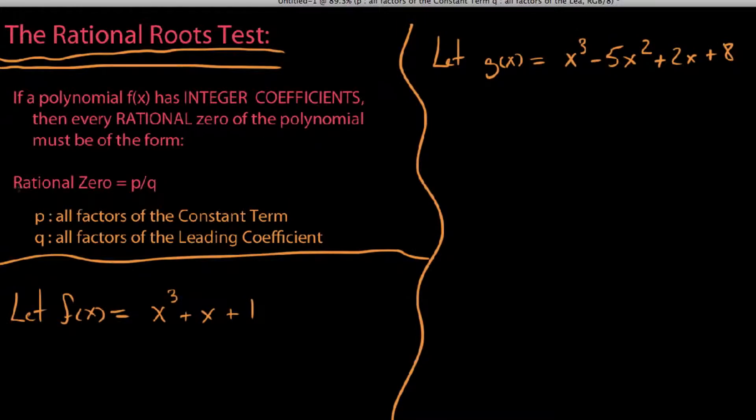So we say, if a polynomial f(x) has integer coefficients, now this is kind of important that it has to have integer coefficients, because if they don't, then this doesn't work. If it has integer coefficients, then every rational zero of the polynomial must be of the form rational zero equals p over q. Now, we'll get to p and q in just a minute.